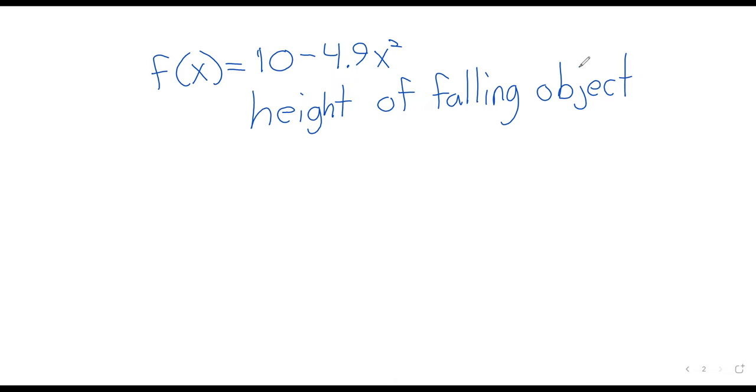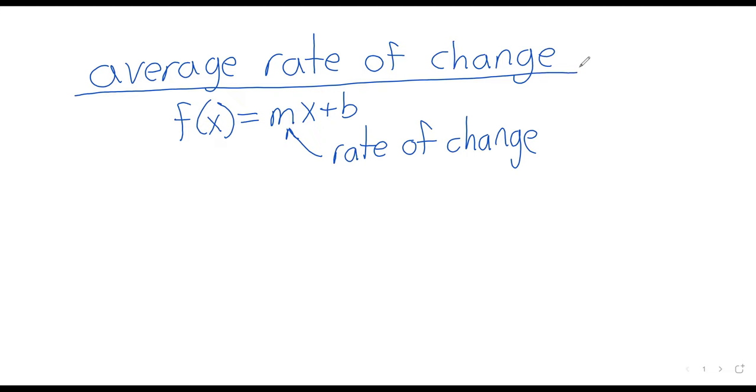But we still might want to know, on average, how quickly was an object falling before it hit the ground. And that kind of summary statement is the average rate of change. Average rates of change of functions are found on intervals. You have to ask what's the average rate of x squared on some interval.